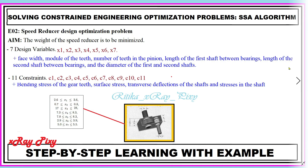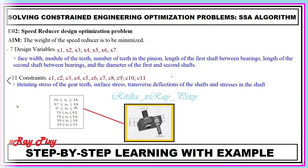For the second problem — the speed reducer design optimization problem — our aim is to minimize the weight of the speed reducer. Here we have seven decision variables and eleven constraints, and we have to satisfy all these constraints. If all constraints are satisfied, we consider the solution feasible; otherwise infeasible.